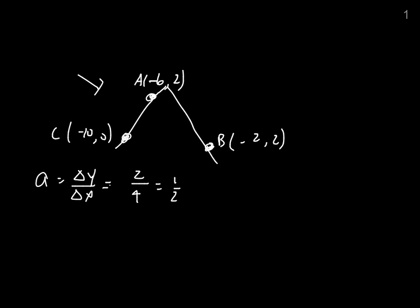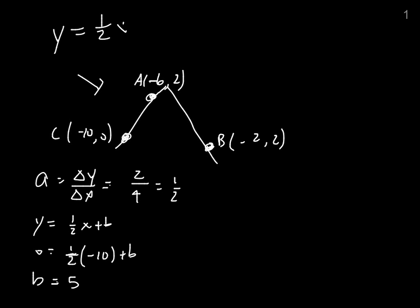Now finding the value of b: I have y equals 1 half x plus b. I choose one of the two points, either a or c, plug it into x and y, and solve for b. I'll choose c because I've got a 0 in the place of y. So 0 equals 1 half times negative 10 plus b, and b equals 5. So the equation of this line is y equals 1 half x plus 5.